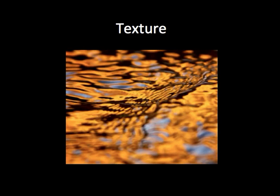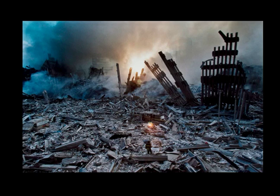Lastly, texture. We crave touch, and an image associated with the touch experience enriches visual communication. You can create texture by shooting at close range to reveal detail on the surface of the object. Contrasting the smooth with the rough is a cool way to create that textured effect. This is a 9/11 photograph that has that textured feel — it's quite beautiful.